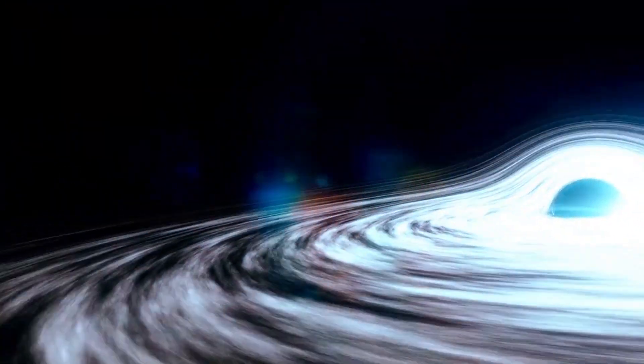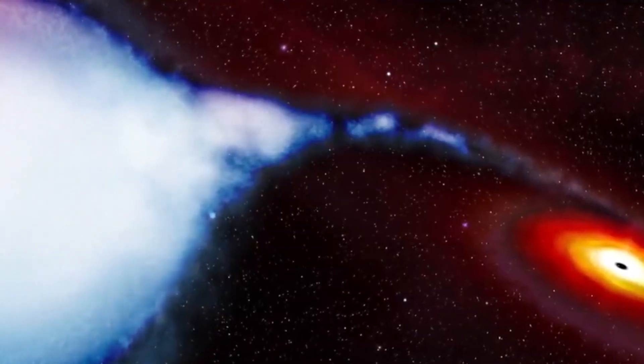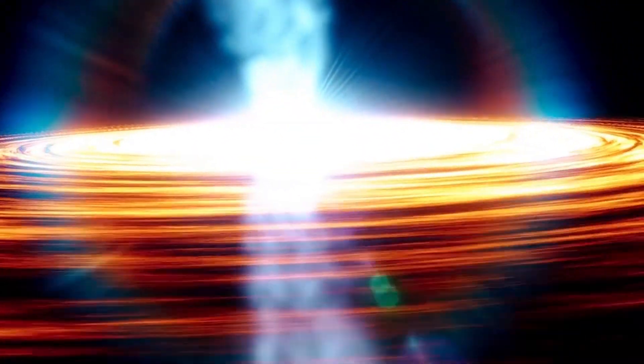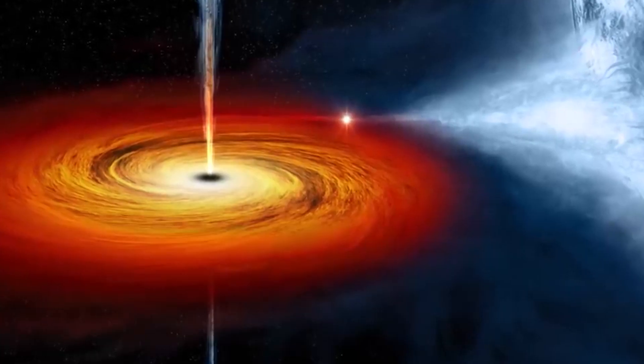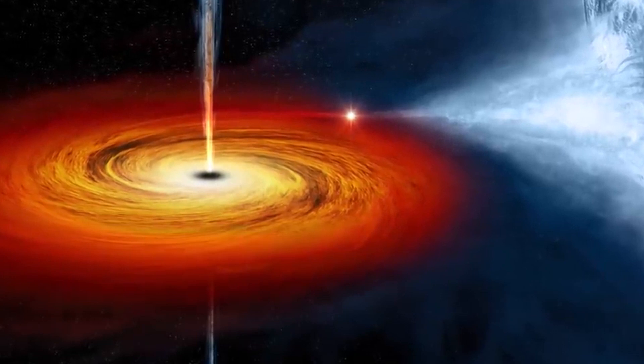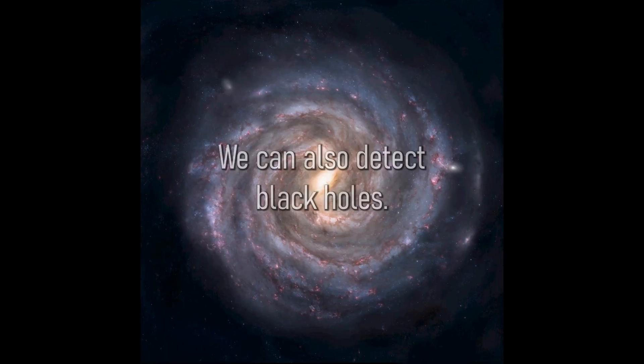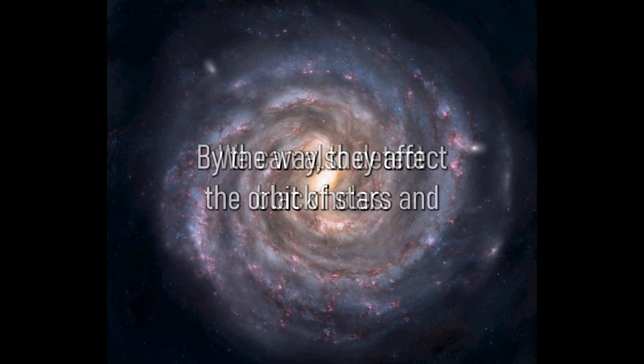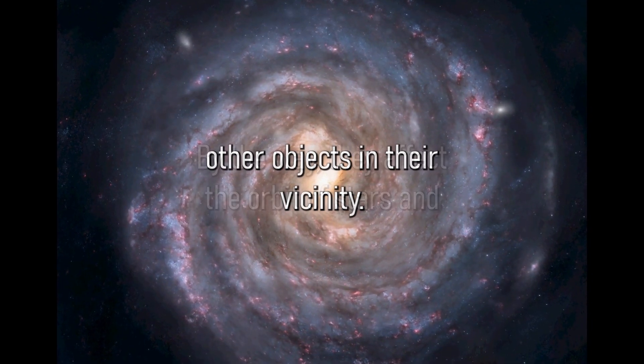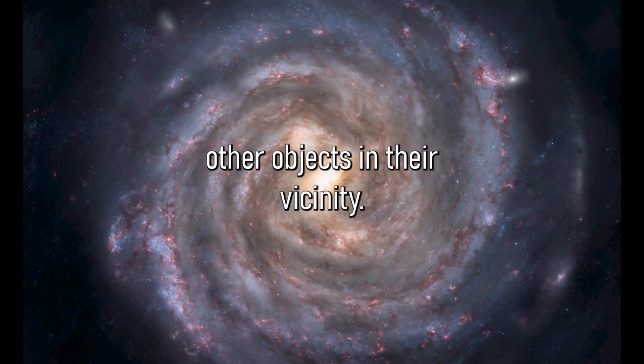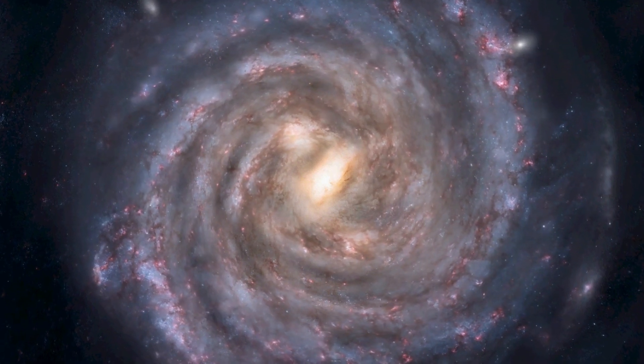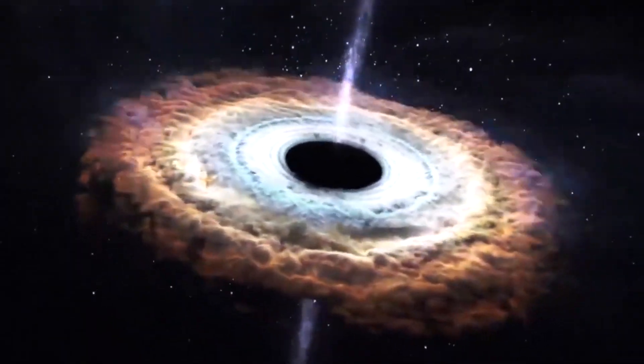For instance, if a black hole is passing through a cloud of gas, the most likely scenario is that the gas will be heated up enough to emit radiation. We can also detect black holes by the way they affect the orbit of stars and other objects in their vicinity, as the strong gravitational pull they have tends to draw everything toward them.